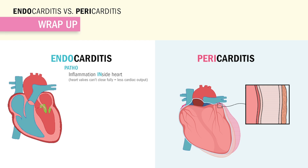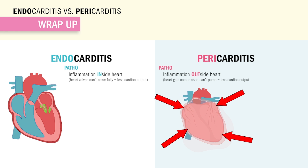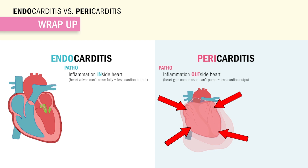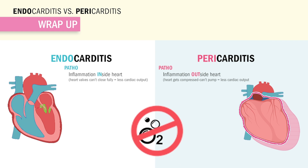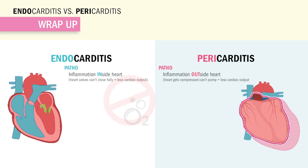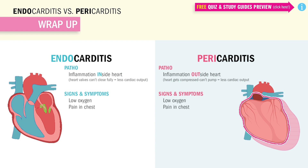Peri for pericarditis means inflammation around the heart, which leads to mounting pressure that eventually squishes the heart and makes it stop beating — either from too much fluid pressure called a pericardial effusion, or blood filling the sack around the heart called a cardiac tamponade. Either way, the heart is not pumping correctly, meaning less oxygen to the body, so we have signs and symptoms of low cardiac output, low oxygen, and pain in the heart.